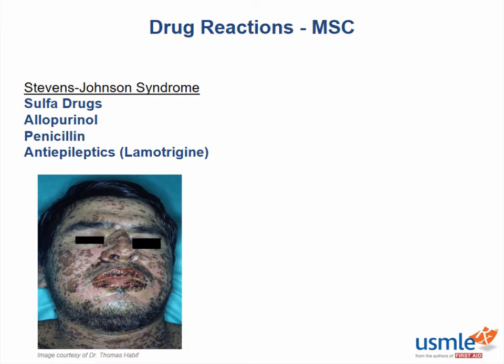Stevens-Johnson syndrome is a rare and serious skin reaction. The leading causes are drugs with sulfa, like the antibiotic TMP-SMX or the gout drug allopurinol. The sulfa groups are very reactive and, when broken down, can directly bind to T cell receptors causing clonal expansion — these T cells will then go on to destroy keratinocytes. Penicillin and anti-epileptic drugs, like lamotrigine, are also culprits.